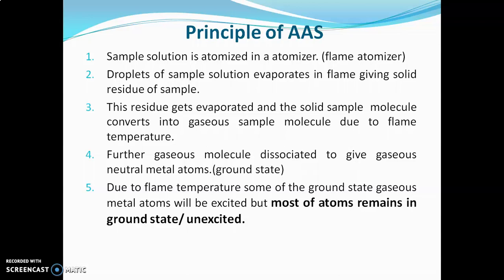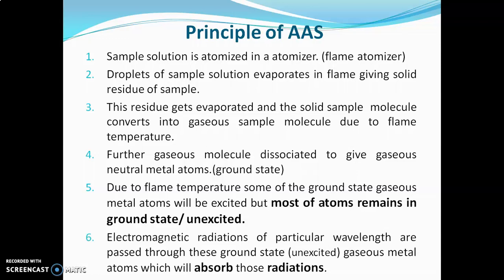The excited atoms show emission of radiation and they are studied by flame photometry, but the atoms which are at the ground state or unexcited state are studied by AAS. Electromagnetic radiations of a particular wavelength are then passed through the ground state unexcited gaseous metal atoms, which absorb those radiations. This absorption of radiation by the gaseous metal atom is the basis of AAS, and the absorbed radiations are measured by the detector.